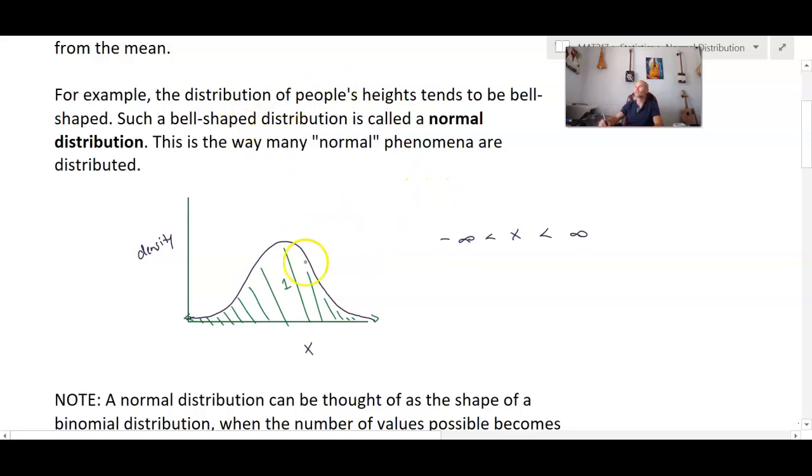So in situations like people's heights, we may have, for instance, the average height mu maybe is 65 inches. And then most people are not too much shorter or too much taller than that.